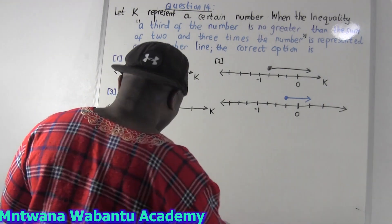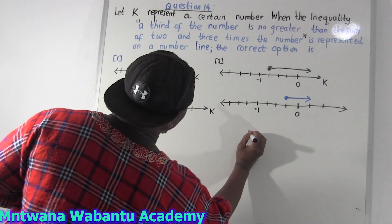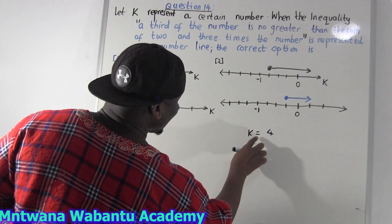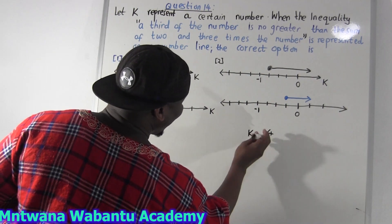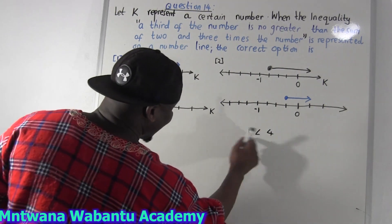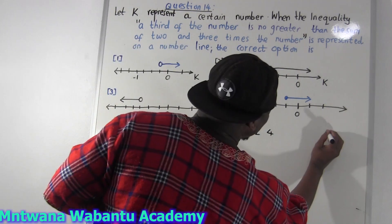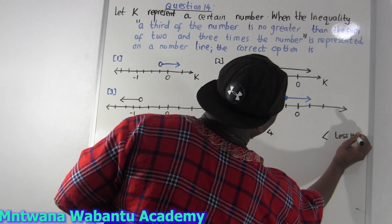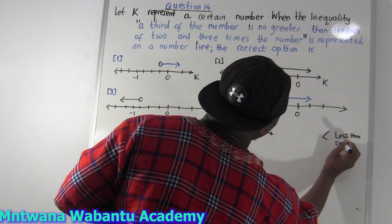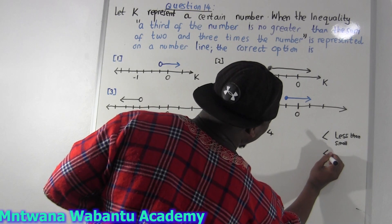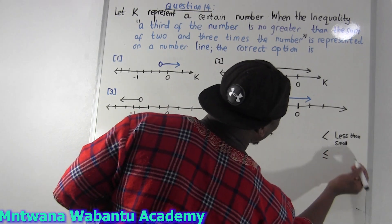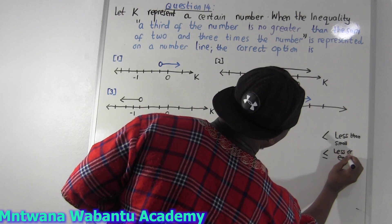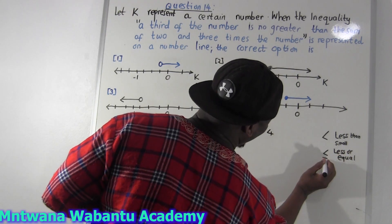For example, if you say K equal to 4, these are equal. But inequality means it could be K is less than 4. This sign here represents less than — less than, or you can say smaller than. But this other sign represents less than or equal.